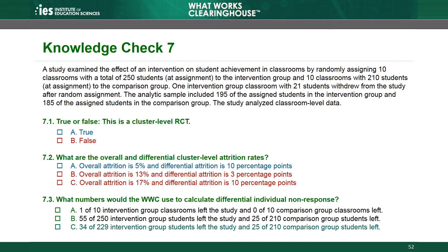The correct answer is C. The study did not include any joiners, so it is acceptable to use data from the time of random assignment as the reference sample. Initially, the study assigned 250 students to the intervention group. However, 21 students were in a classroom that left the study. These 21 students are removed from the denominator because individual non-response is calculated only within the remaining clusters. Thus, the denominator for the intervention group is 229 students, calculated as 250 minus 21.